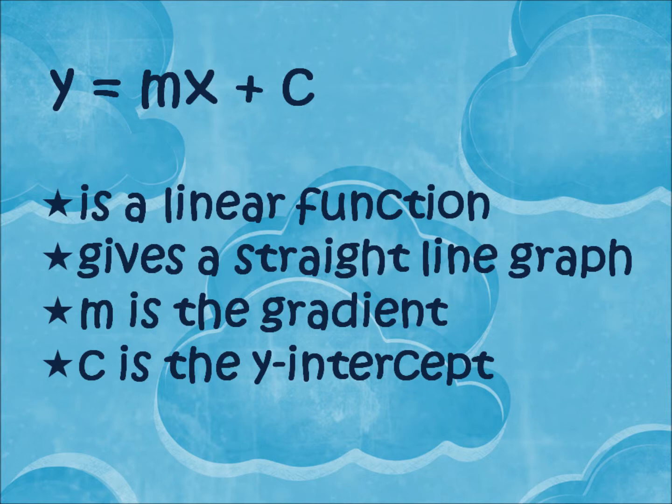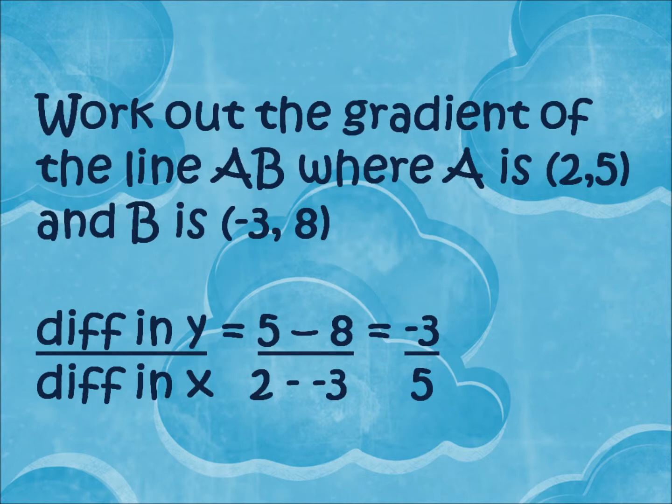There's some combination of values that will give you a straight line graph, where y and x are related by a linear function. Where m is the gradient, and c is where the line cuts the y-axis, the intercept.